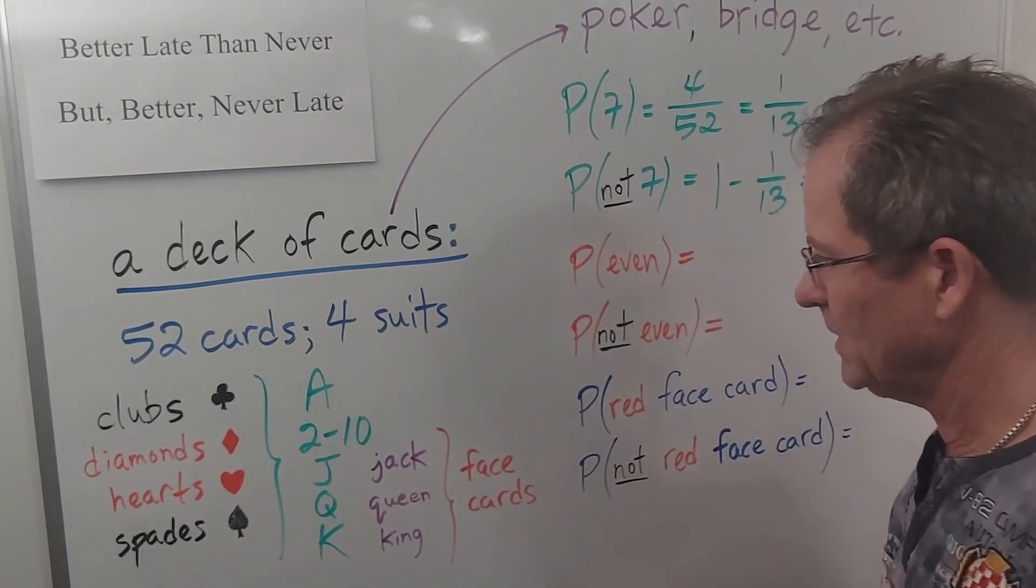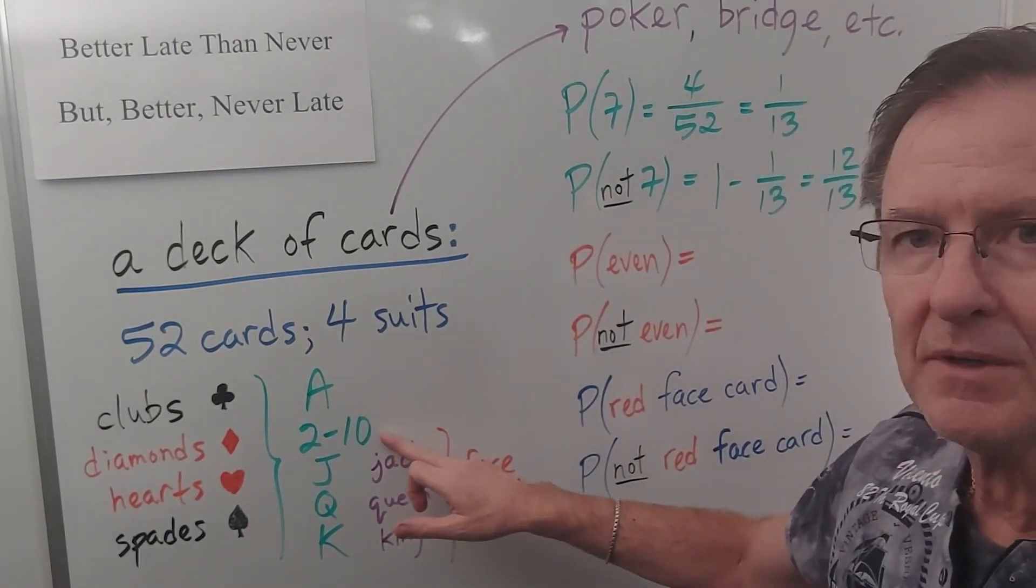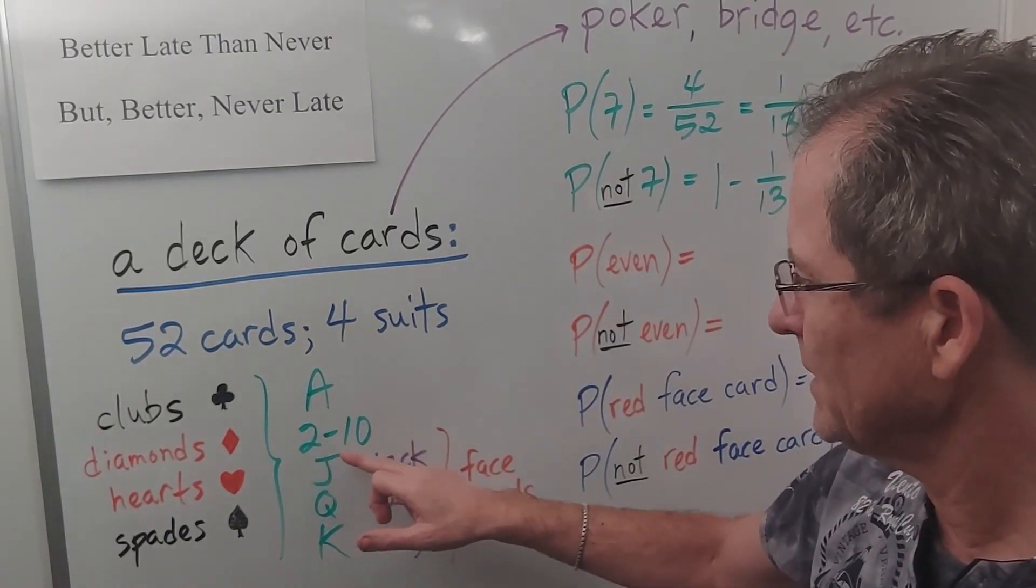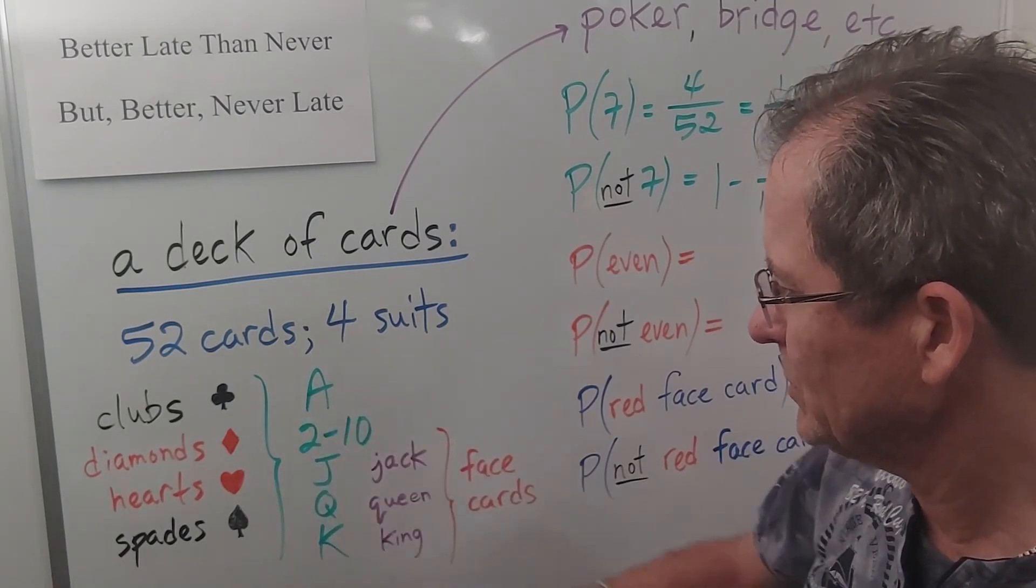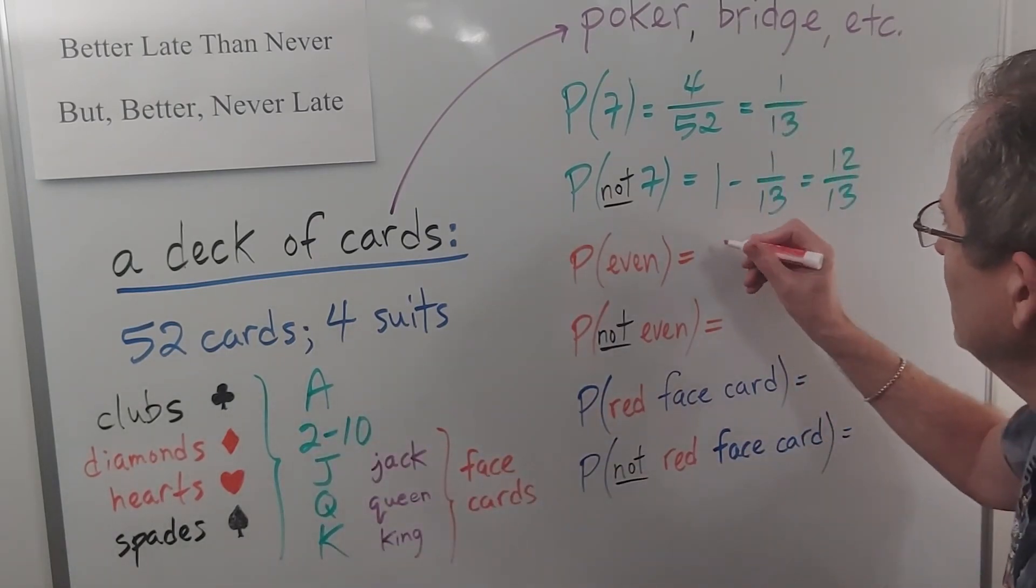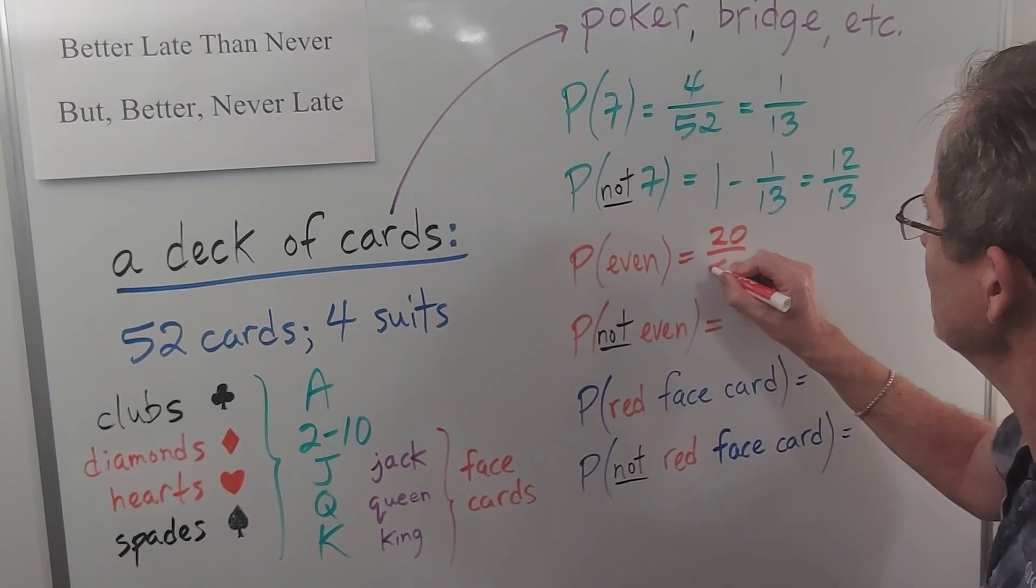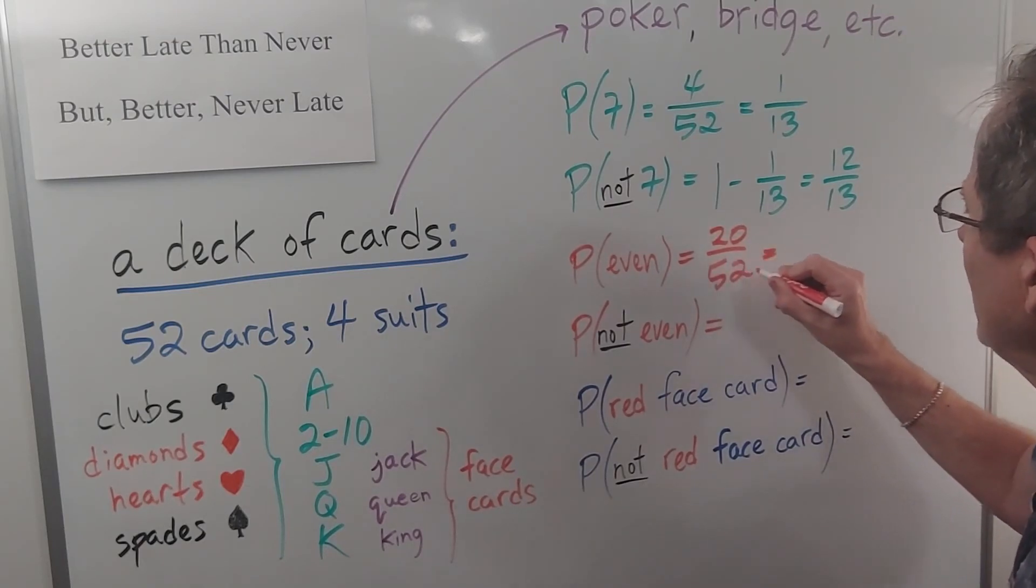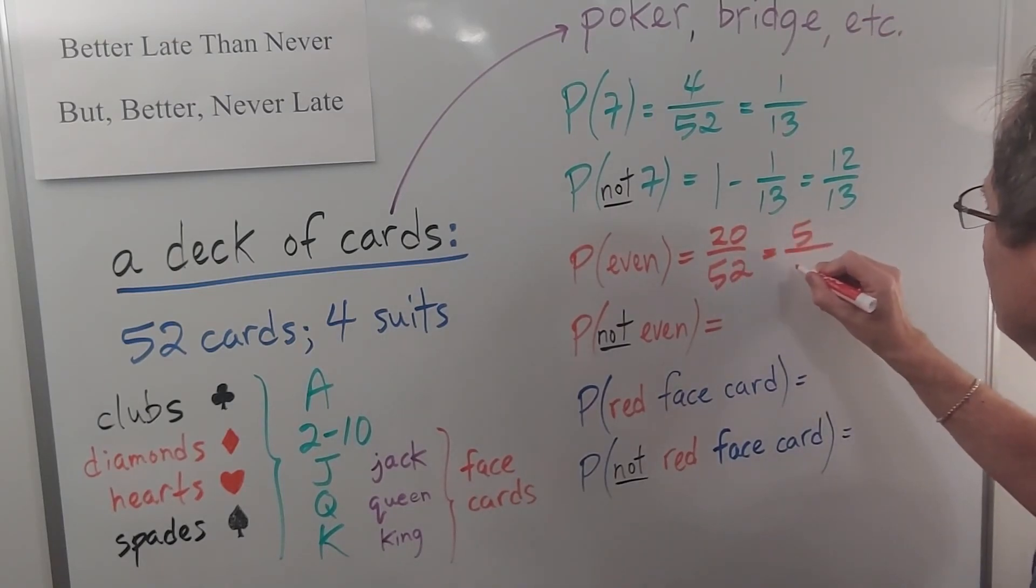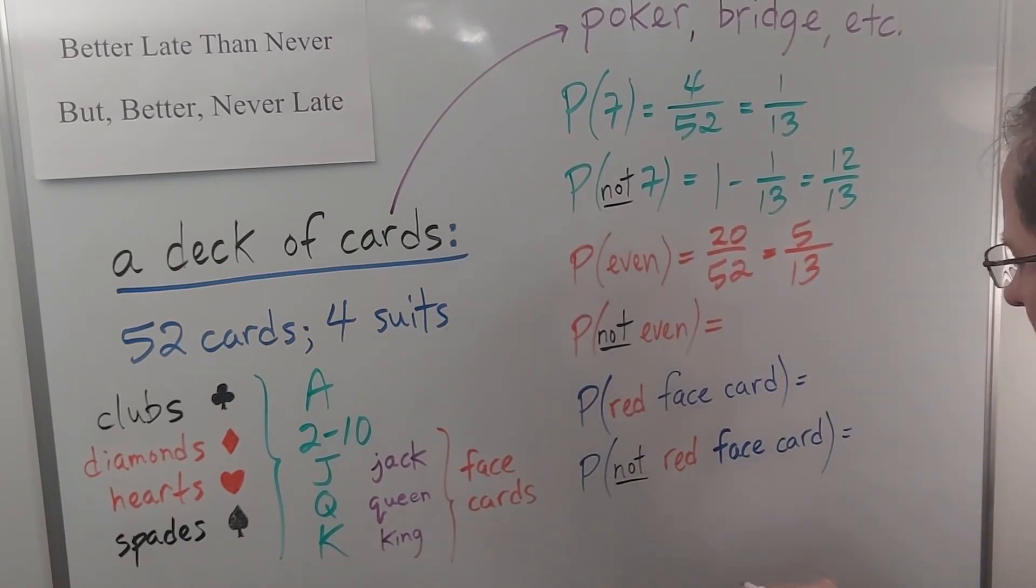Okay what about the probability of getting an even number? Well these are the numbers. So the even ones are two, four, six, eight, ten. That's five. Four suits. Five times four is twenty. So twenty out of fifty two. You divide that by four you get five out of thirteen. That's how often you would expect to get an even number.